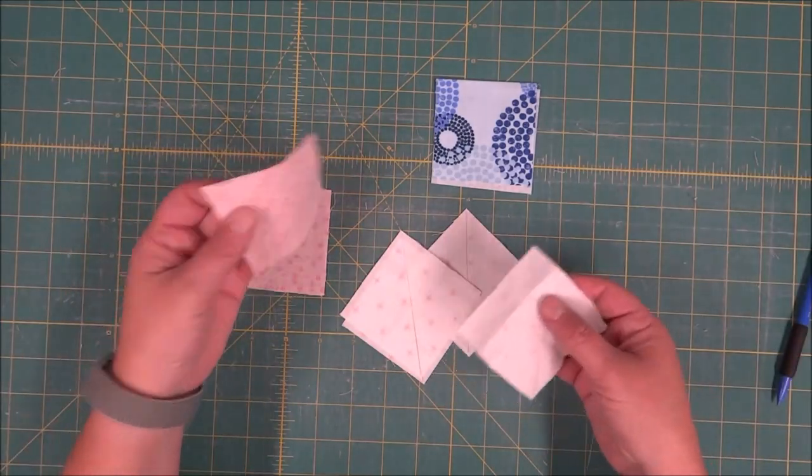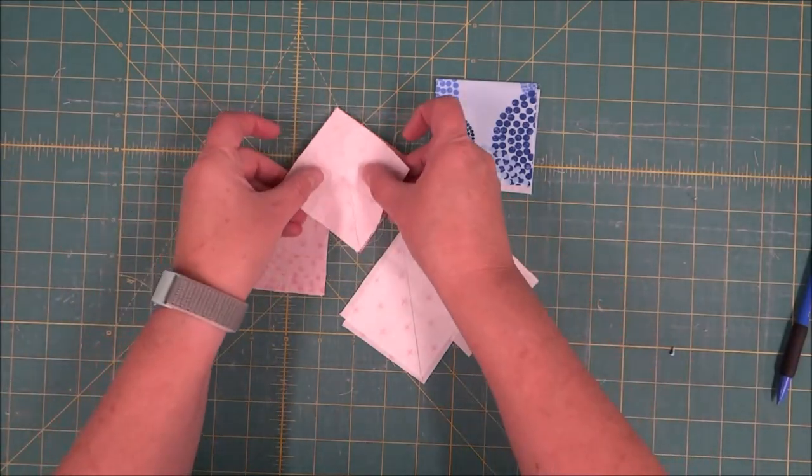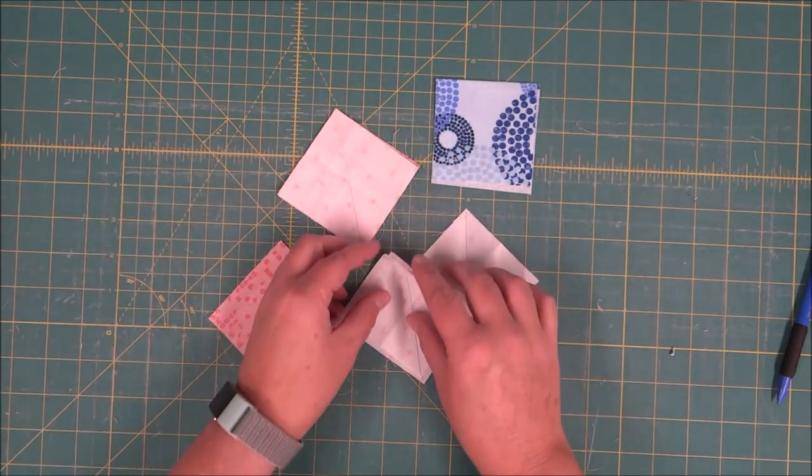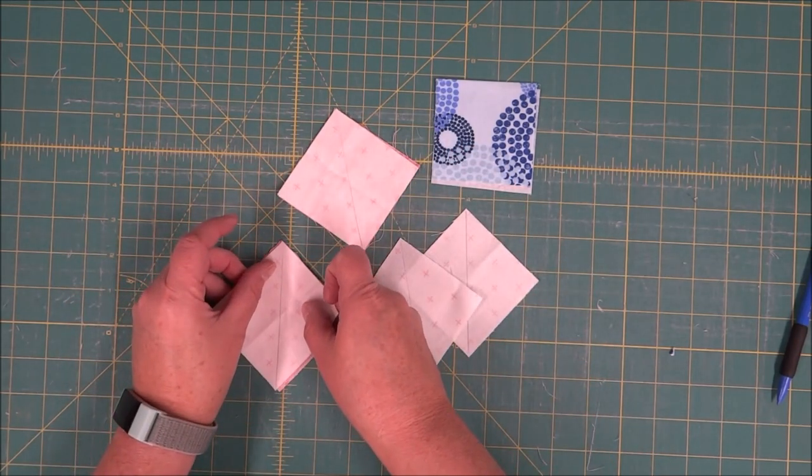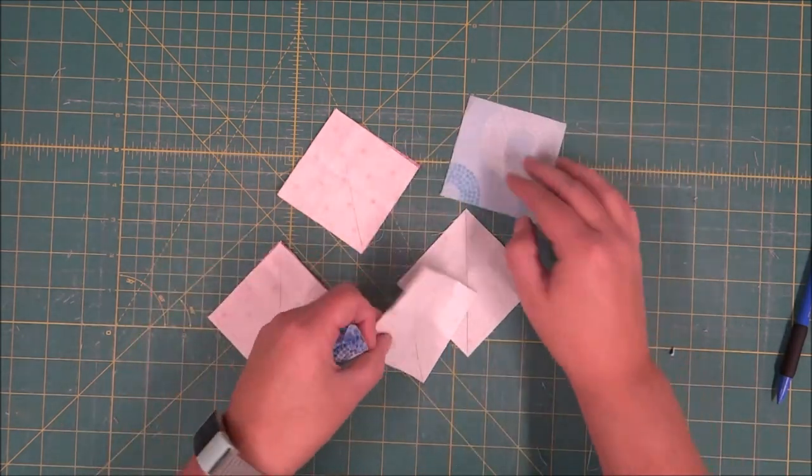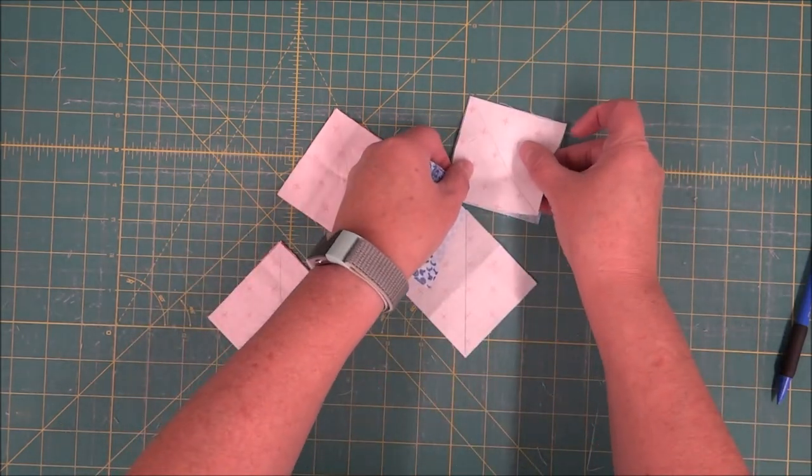Now that we have our lines drawn, we can go ahead and place right sides together, one of the backgrounds with one of the pinks, and then follow that with the other fabric that we're using. Make sure that they are right sides together.